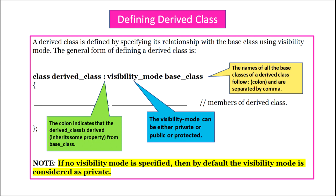A derived class is defined by specifying its relationship with the base class using visibility modes. The general syntax is: class (keyword), then derived class name, colon, visibility mode, and then the name of the base class. The colon indicates that the derived class is derived from the given base class. The visibility modes can be private, protected or public. We can give the name of more than one base class, separated by comma. Please remember that if no visibility mode is specified, then by default the visibility mode is considered as private.